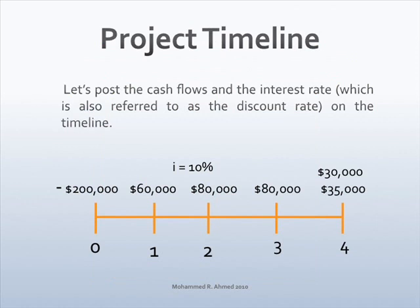Let's post the cash flows and the interest rate on the timeline. Start with negative $200,000 on year 0, $60,000 on year 1, $80,000 on year 2, $80,000 on year 3, $35,000 on year 4, and the terminal year cash flows of $30,000 on year 4. Post the interest rate of 10% above the timeline.